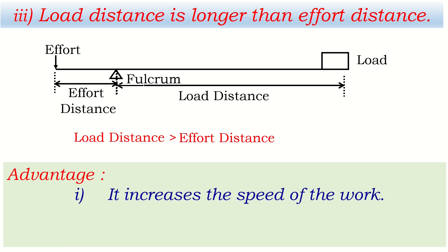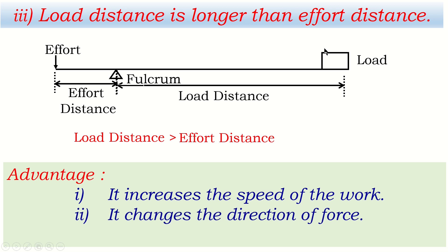In the third condition, effort is applied in the downward direction but the load is raised upward, so it also changes the direction of force. The velocity ratio is the ratio of effort distance to load distance, and since load distance is greater, the velocity ratio will be less than one.